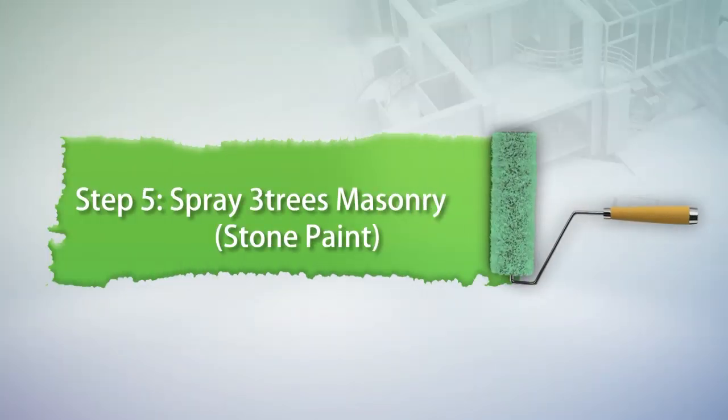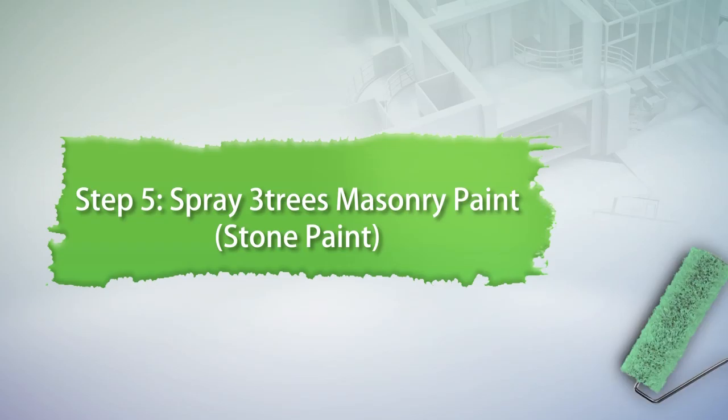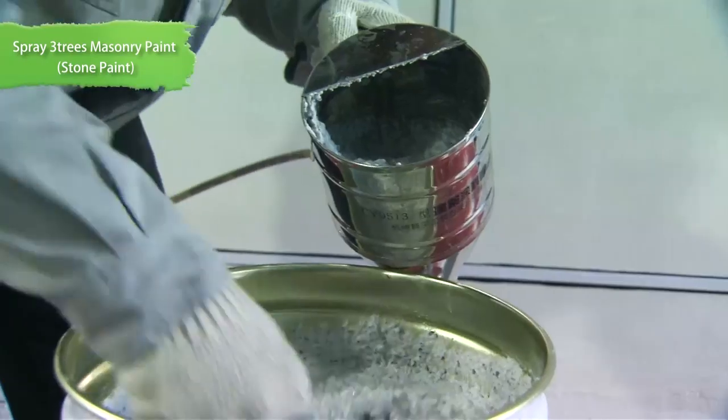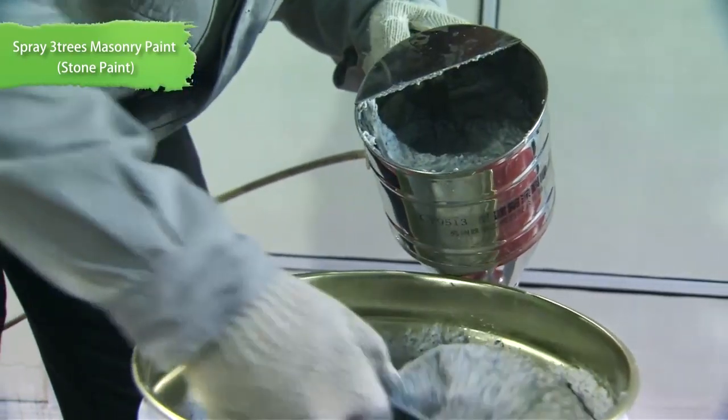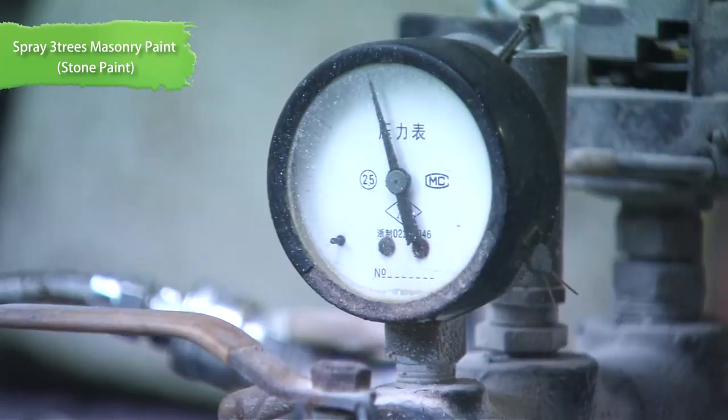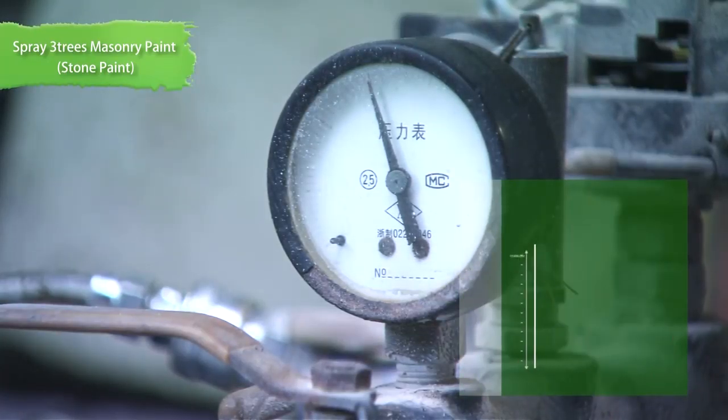Step 5: Spray Three Trees Masonry Paint Stone Paint. Before using masonry paint stone paint, stir it evenly with water proportionally. Generally, spray two times. Please note that the air compressor needs to be aid air pressure.